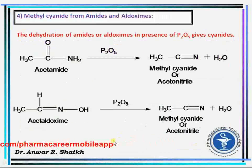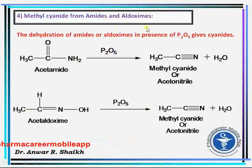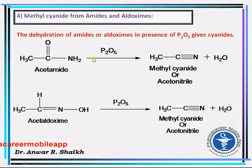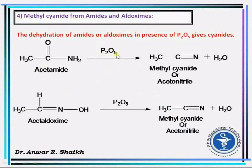The fourth method of preparation of cyanide is using amides and aldoximes. For example, acetamide, which is an amide, when reacted with phosphorus pentoxide forms methyl cyanide.